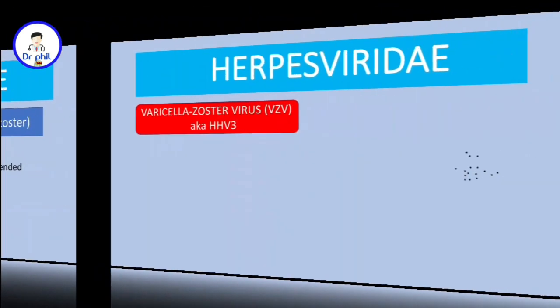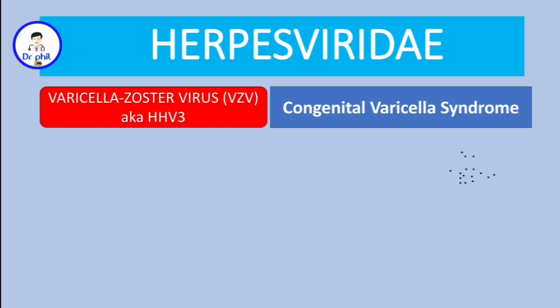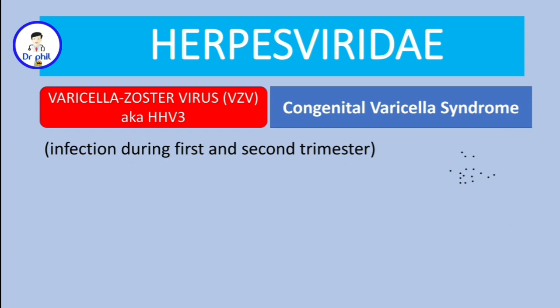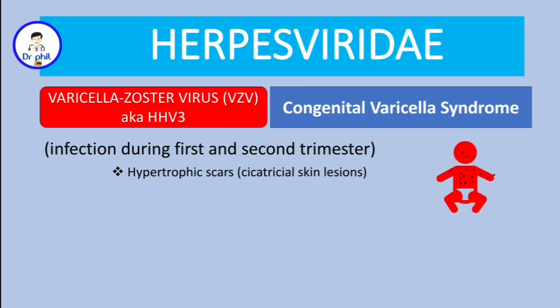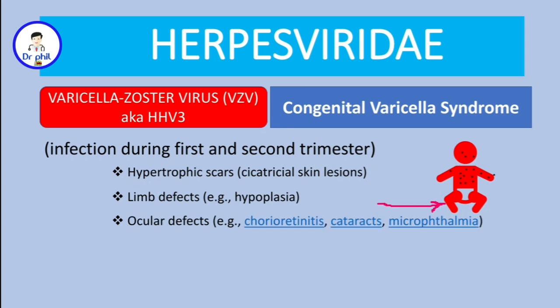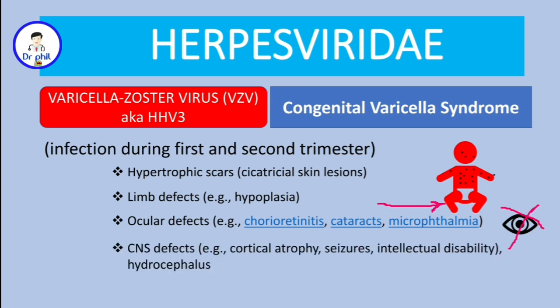Congenital varicella syndrome results from infection during the first and second trimester. Main characteristics include hypertrophic (cicatricial) skin lesions, limb defects such as limb hypoplasia, and ocular defects like chorioretinitis, cataracts, and microphthalmia, which can cause loss of vision. CNS defects may also occur, including cortical atrophy, seizures, intellectual disability, and hydrocephaly.